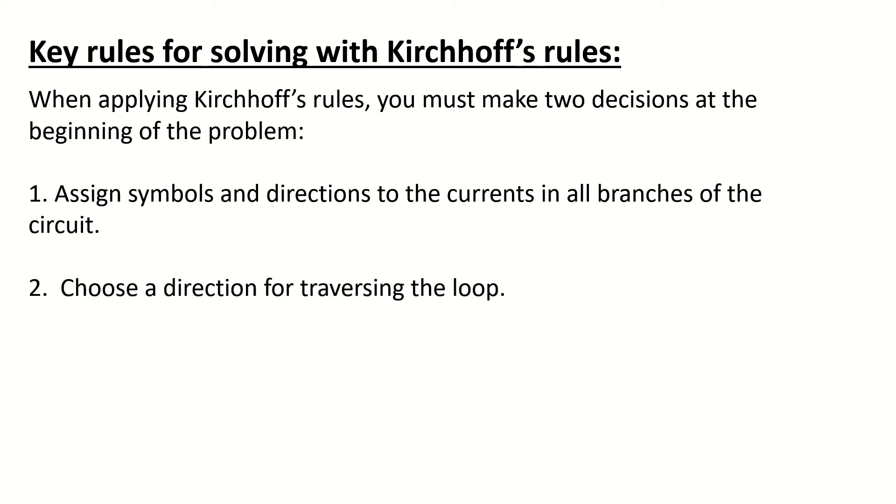The second decision is to choose a direction for traversing the loop. When applying the loop rule, you must choose a direction for traversing the loop and be consistent in going either clockwise or counterclockwise. As you traverse the loop, record voltage drops and rises according to the following rules, which will be summarized in the next figure, where it is assumed that movement is from point A toward point B.